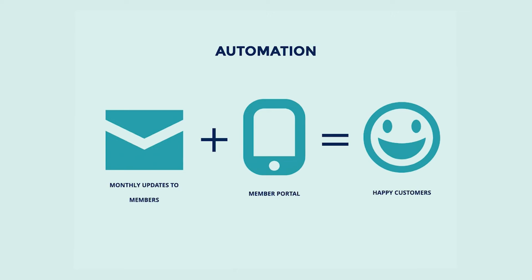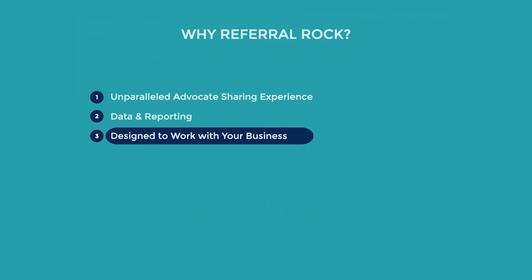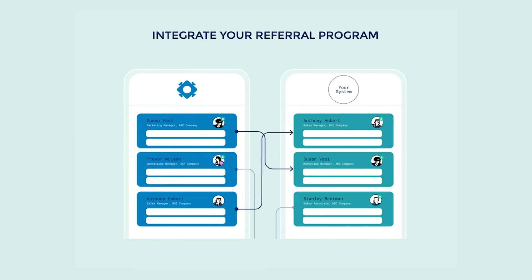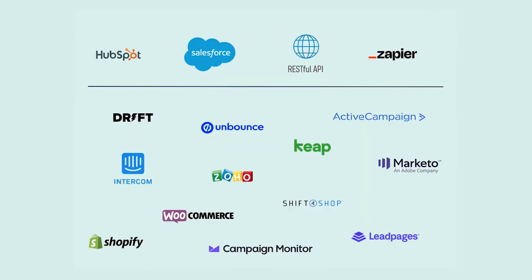Referral Rock was designed around flexibility, customization, and with the understanding that no two businesses are the same. Through our extensive integrations and integration documentation, you can seamlessly connect external systems with Referral Rock, which will in turn automate your referral program. Remember those referral statuses we discussed earlier — by connecting your external systems with Referral Rock, you will automate how and when those referral statuses change, as well as update other important information about your referrals, such as how much money they spent. If you are using HubSpot or Salesforce, great news — we have native integrations with both, allowing them to automatically communicate with each other in order to update referrals as they progress through your customer journey.